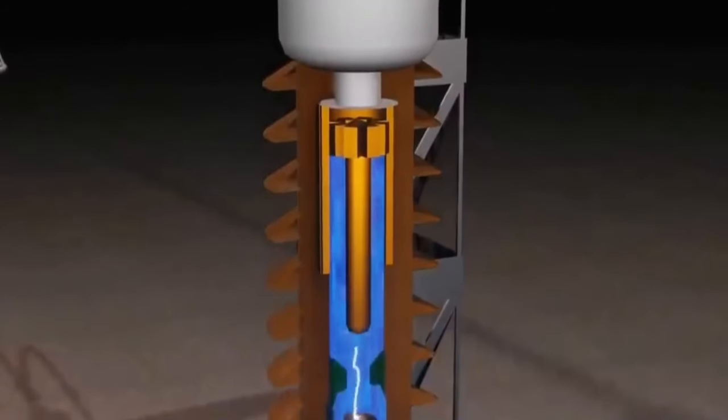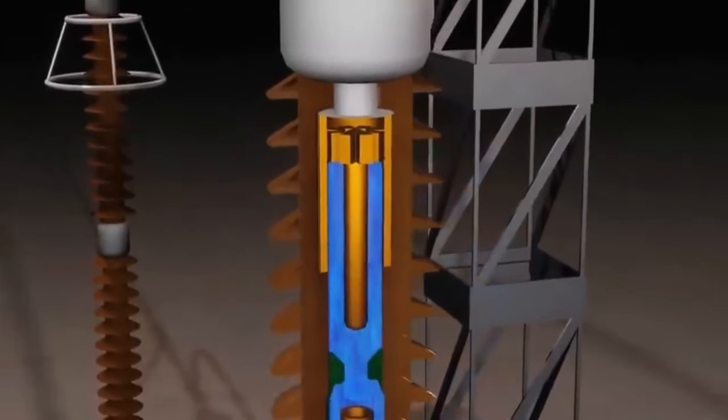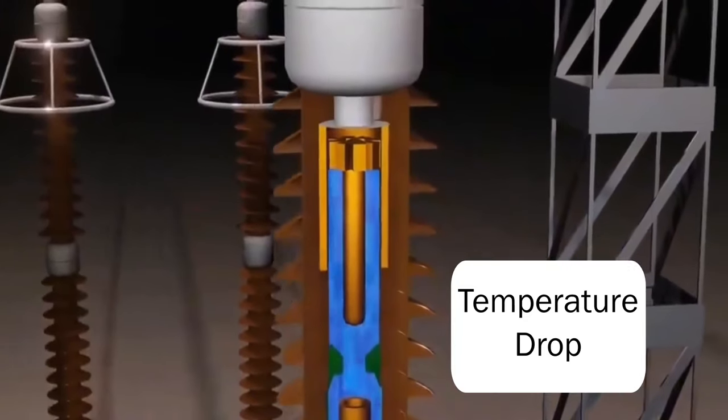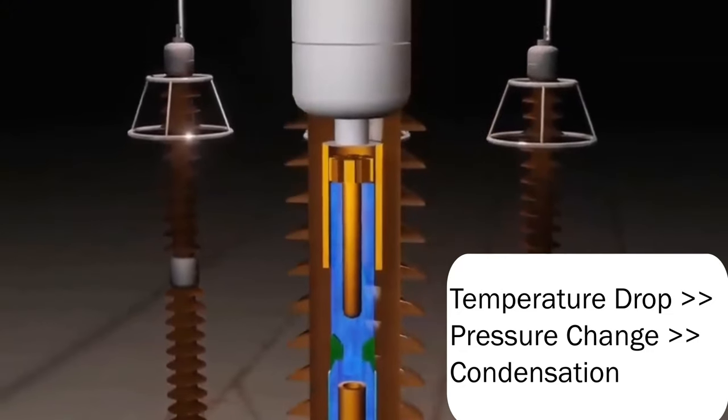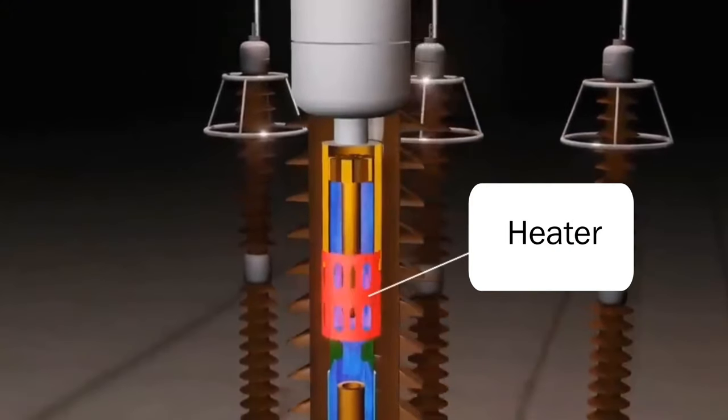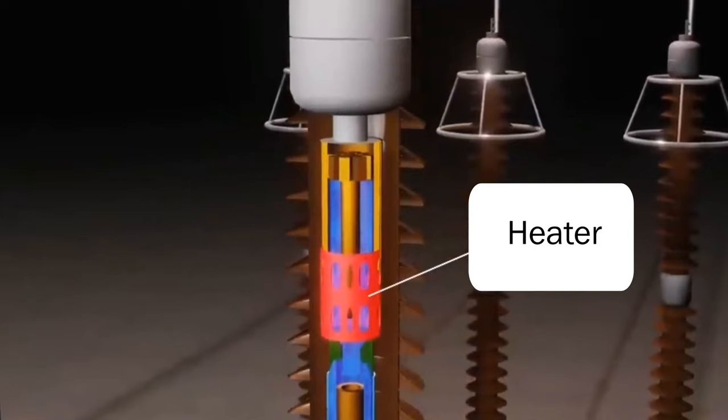However, there is an issue. After the arc is extinguished, the temperature inside the circuit breaker decreases, and under certain pressure, sulfur hexafluoride will transform into a liquid. At this position, a heater is also needed to ensure that SF6 remains in a gaseous state.